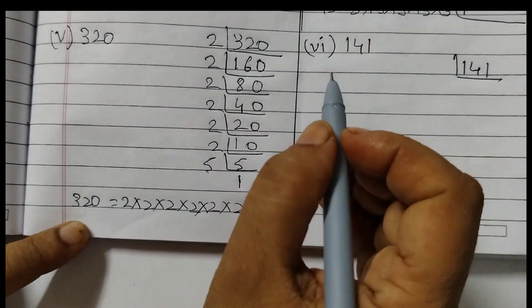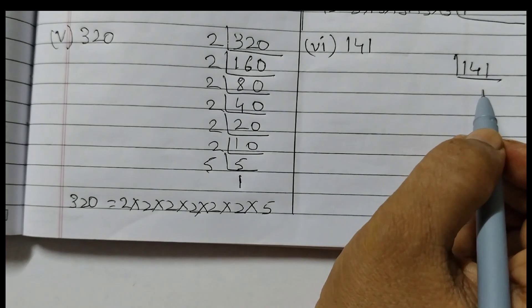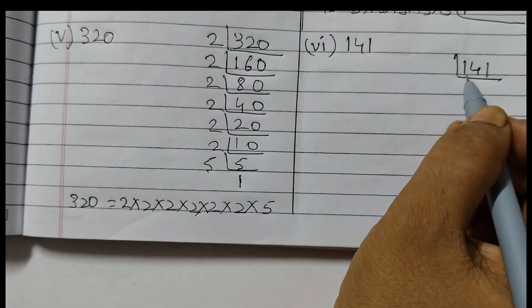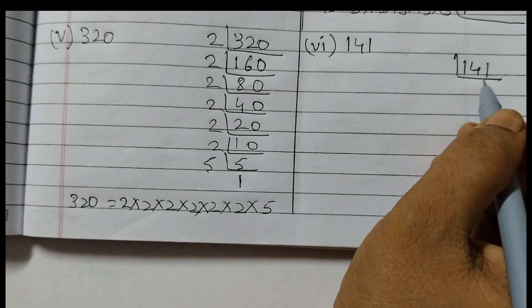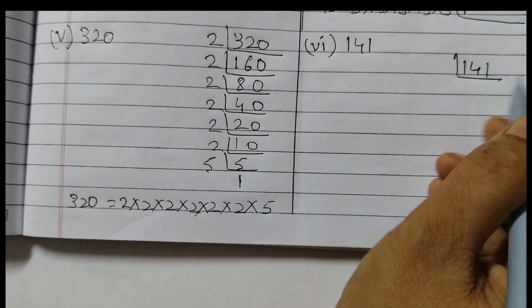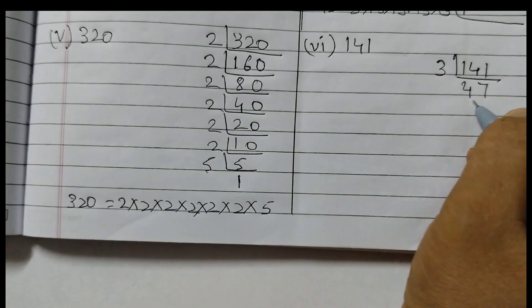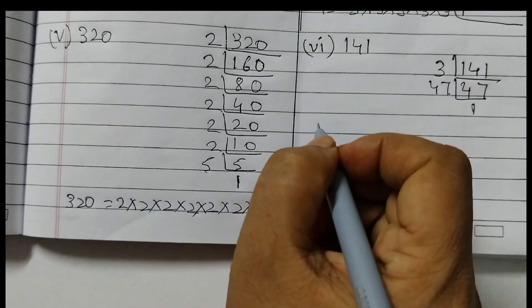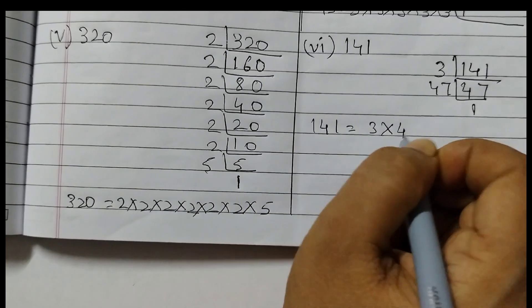Next is 141. 141 is divisible by 3. How do we know it is divisible by 3? Just add up the digits: 1 + 4 is 5, 5 + 1 is 6. If the sum is divisible by 3, then that number is also divisible by 3. So 141 ÷ 3 = 47. 47 is a prime number. So 141 is 3 × 47.